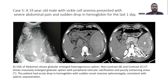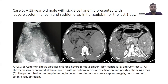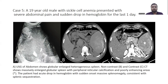Case 5: a 19-year-old male with sickle cell anemia presented with severe abdominal pain and a sudden drop in hemoglobin over the last one day. Ultrasound showed globular enlargement of the liver with heterogeneous echotexture. Non-contrast CT showed a massively enlarged globular spleen with peripheral lytic calcification. On contrast images, there were poorly enhancing areas within, and the patient had an acute drop in hemoglobin with sudden-onset ascites, consistent with splenic sequestration crisis.